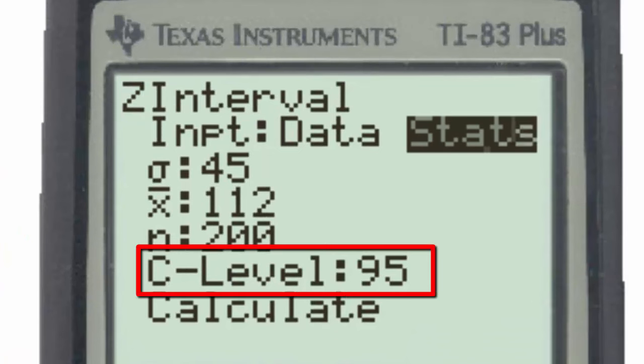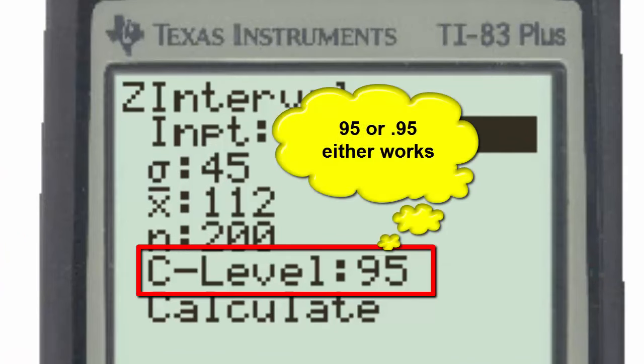We are asked to construct the 95% confidence interval so the C-level can be input as 95 or 0.95. Either of these two inputs will be accepted by the calculator.